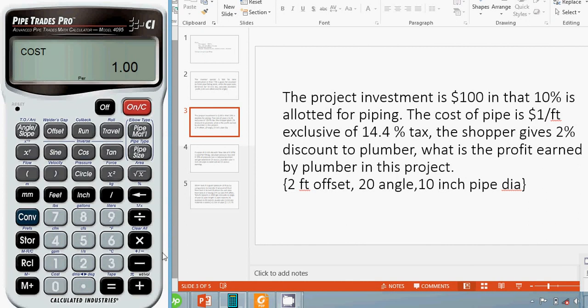The cost of pipe is stored. The second information we need is the length of the pipe. From the given data: 2 ft offset, 20 degree angle, and 10 inch pipe diameter.